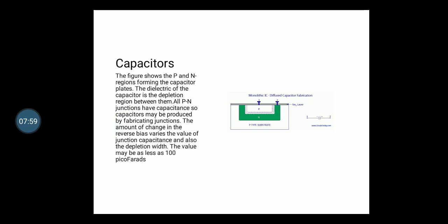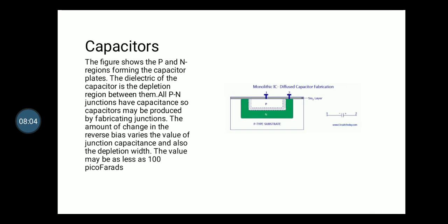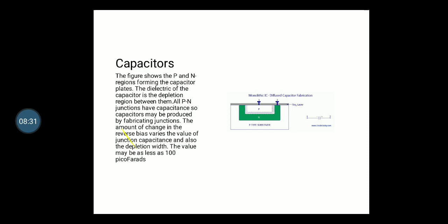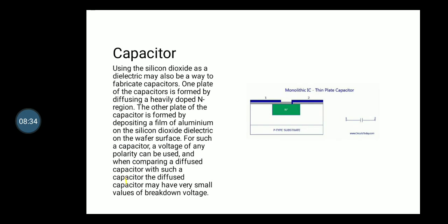Next one is the capacitor. The figure shows the p-n region forming the capacitor plates. The dielectric of the capacitor is the depletion region between them. All the p-n junctions have capacitance, so that the capacitor may be produced by fabricating junctions. The amount of change in the reverse bias varies the value of junction capacitance and also the depletion width. The value may be less than 100 picofarads.